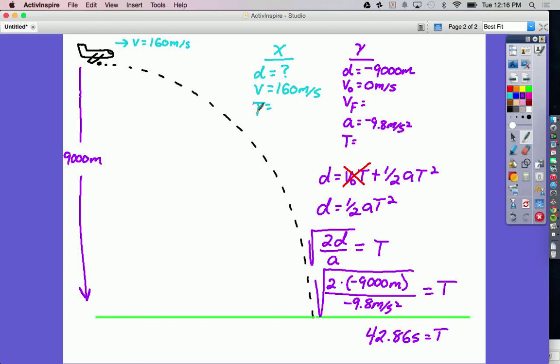Now I know what the time is in the X direction. That's got to be the same thing, 42.86 seconds. Now I can plug in the only equation we have in the X direction, because there's no acceleration, there's just one equation to pick, and that is D equals V times T.